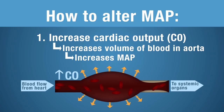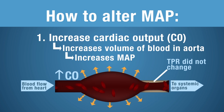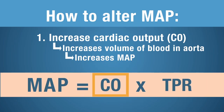Please note that in this instance we did not change total peripheral resistance — there's no vasoconstriction or vasodilation here. We are only increasing cardiac output. Look at your formula: if I increase cardiac output, that's going to increase MAP.